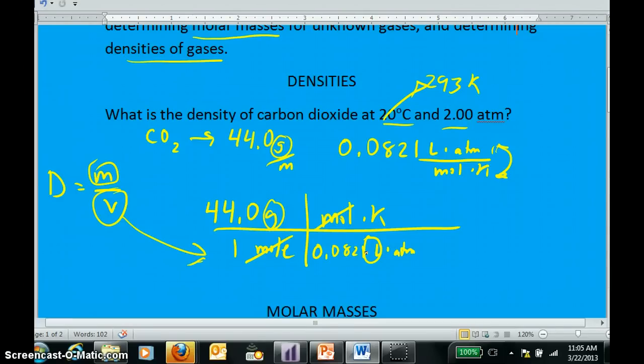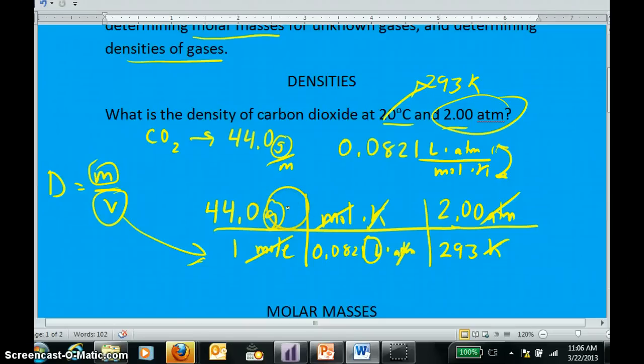However, there are two quantities we don't want. We don't wish to have a temperature, and we don't wish to have units of pressure. So I need to cancel those. And that's very simple because I was given a temperature, which if I divide by, will cancel the temperature. And I'm given a pressure, which if I multiply by, the atmospheres cancel, leaving me with a ratio of mass to volume, mass over volume.